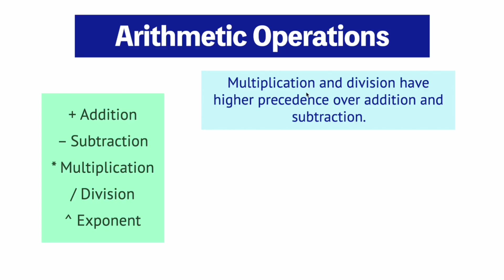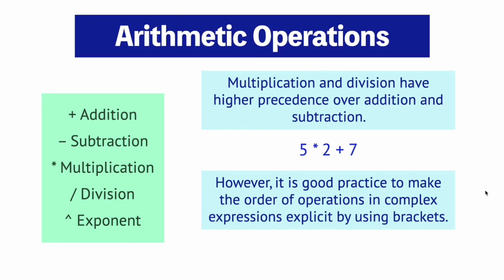Now onto arithmetic operations. These symbols here are used to represent these math operations which I'm sure that you're already familiar with. Following mathematical conventions, multiplication and division have higher precedence over addition and subtraction, meaning that you should do multiplication and division before you do these two. For example if you have this you should do five times two before you add seven. However, it is good practice to make the order of operations in complex expressions clearer by using brackets like this.